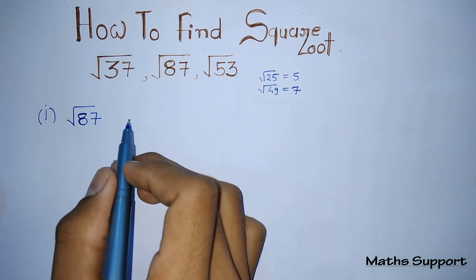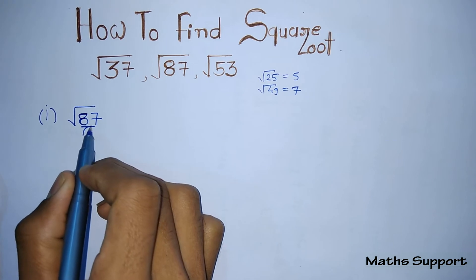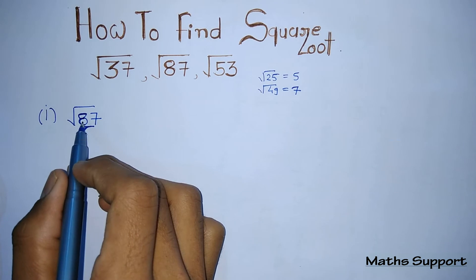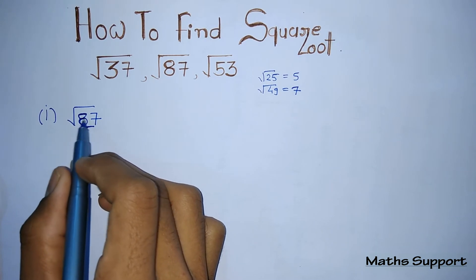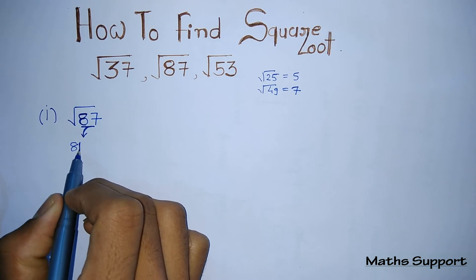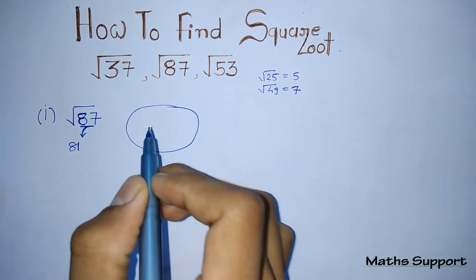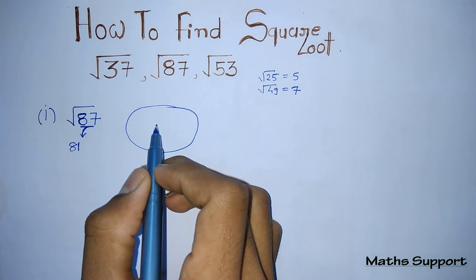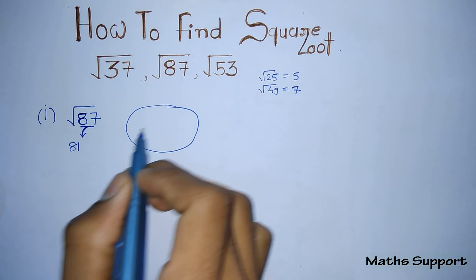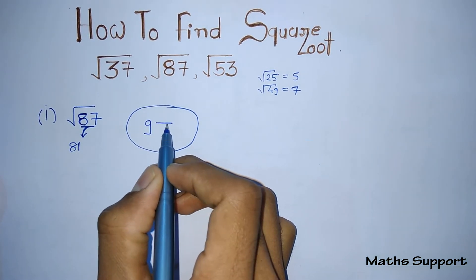First step: write the perfect square number that is smaller and nearer to 87. The perfect square number nearer to 87 is 81. Whatever answer we get will be a mixed fraction, so first put the square root of 81, that is 9.